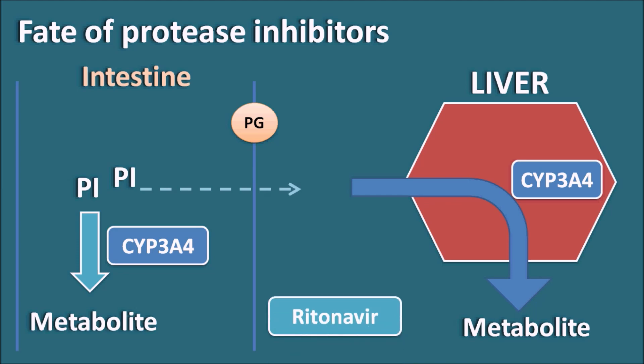Now here Ritonavir is going to play an important role. Ritonavir is acting like a booster drug because it is going to inhibit the metabolism of these protease inhibitors at the intestine as well as at the liver. It also inhibits the P-glycoprotein pump, thereby inhibiting the metabolism and increasing the bioavailability of the protease inhibitors. In this way Ritonavir can increase the bioavailability of the protease inhibitors by inhibiting their first-pass metabolism as well as their efflux out of the intestine.